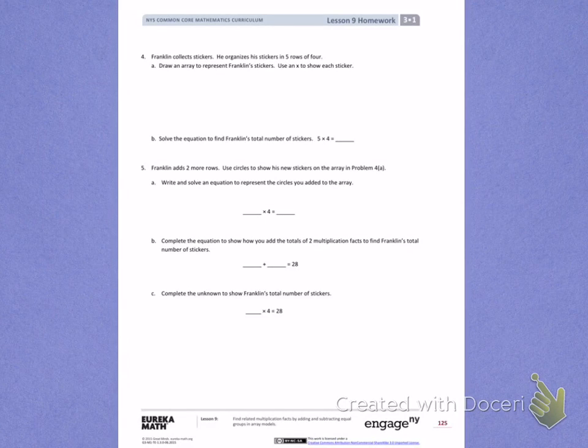This is Module 1, Lesson 9. Today's objective was to find related multiplication facts by adding and subtracting equal groups in array models.